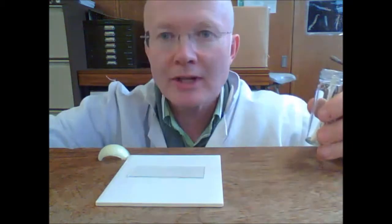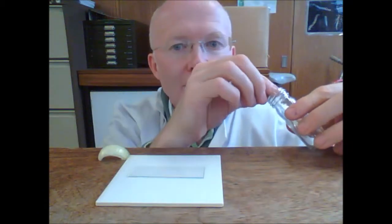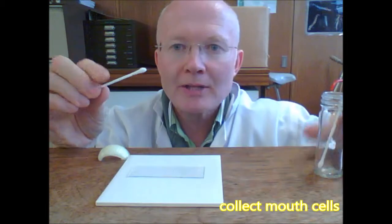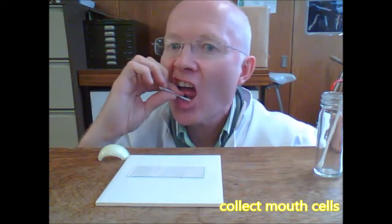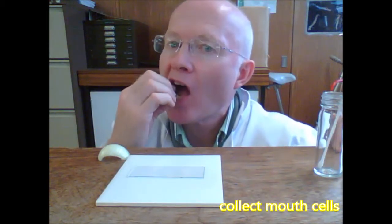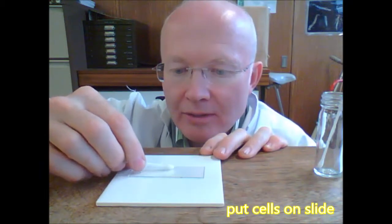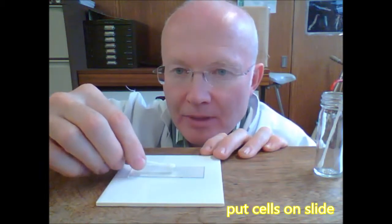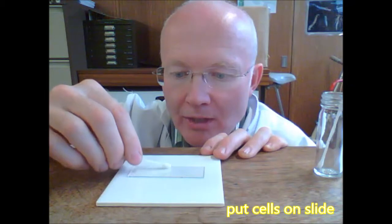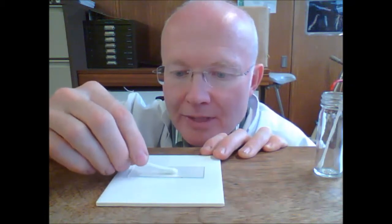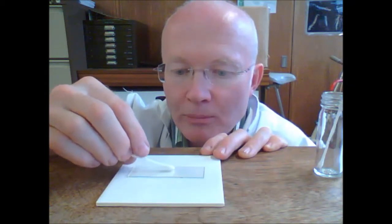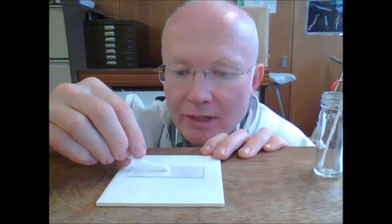Okay, to examine cheek cells of the microscope, you take a cotton bud. Once you've rubbed it around your mouth, gently print it onto your slide, and then just turn it as you go in the middle of the slide, and you'll print some of your cells onto the slide.